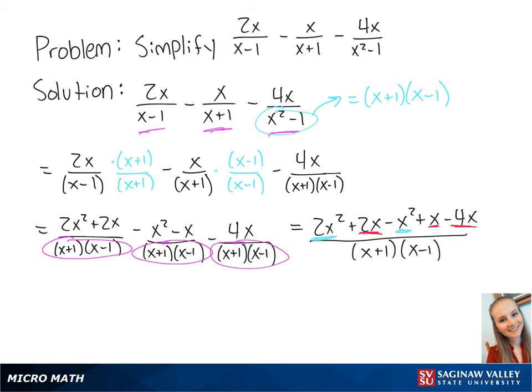If we combine the like terms, this is going to give us x squared minus x over x plus 1 times x minus 1.